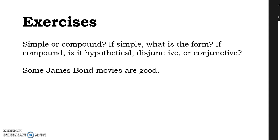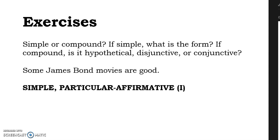'Some James Bond movies are good.' How many terms? Two terms: James Bond movies and the idea of things that are good. Two terms tells us it's simple. Now quality and quantity: is this affirmative or negative? It's affirmative. Quantity: are we talking about the whole class or a part of the class of James Bond movies? 'Some' tells us it's particular. So we're looking at a particular affirmative proposition — that's I. A simple, particular, affirmative proposition.